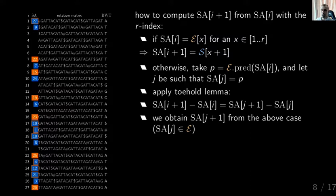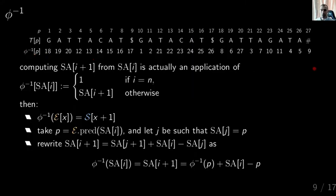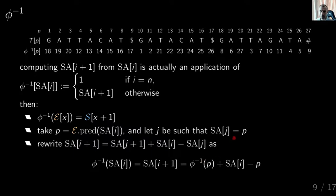Then we apply the toehold lemma, and it tells us that these differences are equal. Since SA[j] is in E, the next value going down is already sampled — it's the start of the next run. We also know SA[i], so we can compute SA[i+1]. This is actually a computation of phi inverse. Phi inverse applied to the i-th entry of the suffix array gives us the i+1-th one, which is what we did — it gives us the start of the next run, or otherwise we take the predecessor and get this equation.